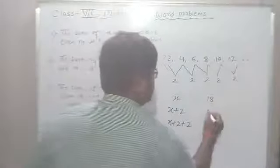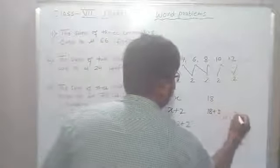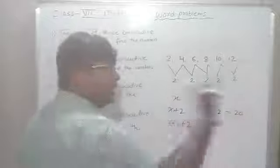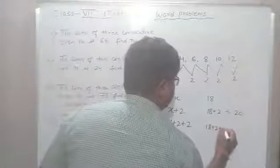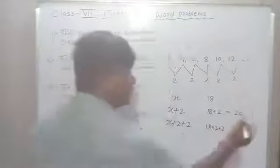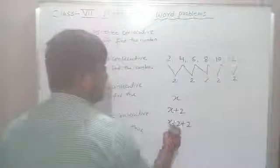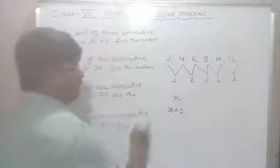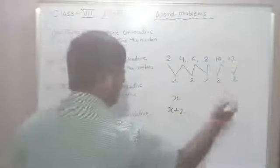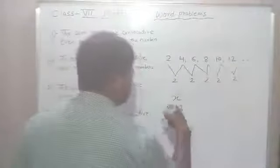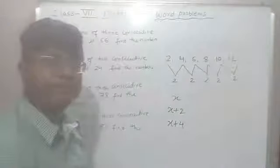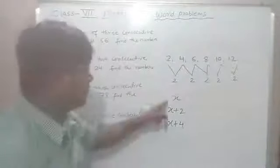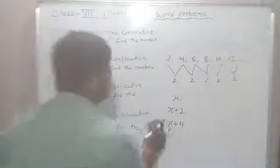Just as with 18: the next is 18 + 2 = 20, and the one after is 18 + 2 + 2 = 22. Similarly, if x is the first even number, the second is x + 2, and the third is x + 2 + 2, which equals x + 4.